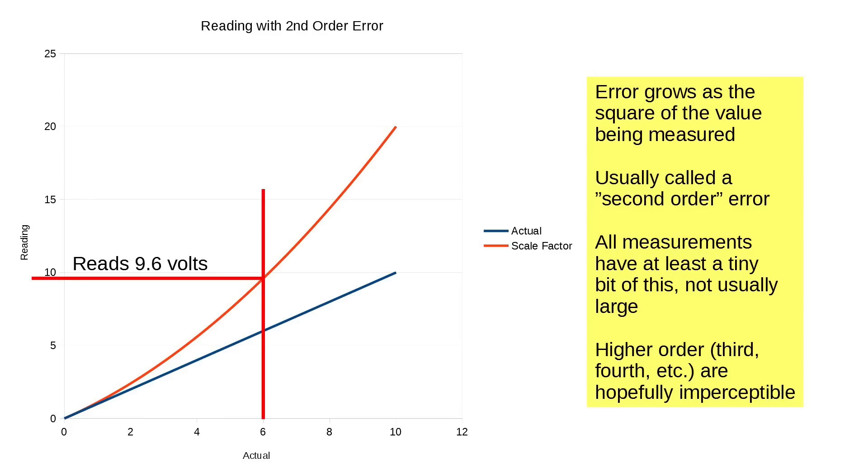Now, here is a really exaggerated second-order error. The error grows as the square of the value being measured. It's usually called a second-order error. You've heard the phrase second-order effects, things like that. Colloquially, the expression means unexpected results or something you weren't really looking for, but you certainly can look for it. All measurements have at least a tiny bit of this, but not usually large in amateur radio. Note that higher order, third, fourth, etc., are hopefully imperceptible. But in this case, with a rather major second-order error, the six volts in reads 9.6 volts out.